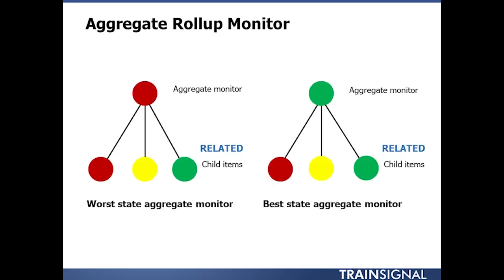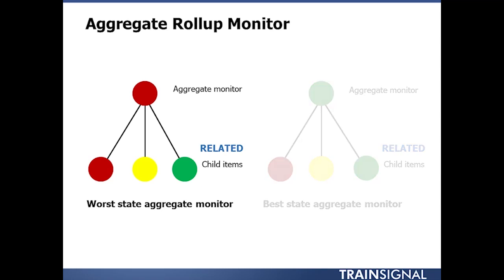When you think about how this rolls up to a higher level item, when you have a group of items being monitored with an aggregate monitor, you've got a couple of different choices for how the state information can be rolled up.